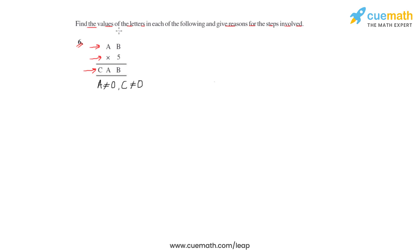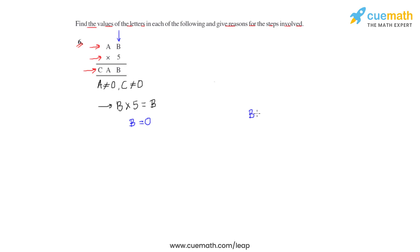Now let us study the product at the ones column. This gives us the result that when b is multiplied by five, we get a number where b is at the ones place. This result is only possible for two values of b: the first is b equals zero, and the second is b equals five.